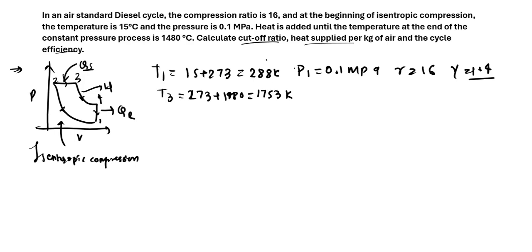So we can further solve this question using the isentropic compression formula. First of all, we need to calculate the cutoff ratio, which we know is the volume. So let us say alpha is volume after combustion, which is V3, divided by volume before combustion, which is V2. And since it is a constant pressure process, you can write P as RT by V because of the ideal gas equation.